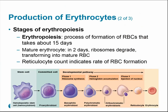The production of erythrocytes is called erythropoiesis — formation of red blood cells — and the process takes roughly 15 days. It begins from a hematopoietic stem cell. The immature version of the red blood cell is the reticulocyte, which then matures into a fully formed erythrocyte within about two days. Throughout the process, the cell loses its nucleus and organelles to take on the erythrocyte shape.